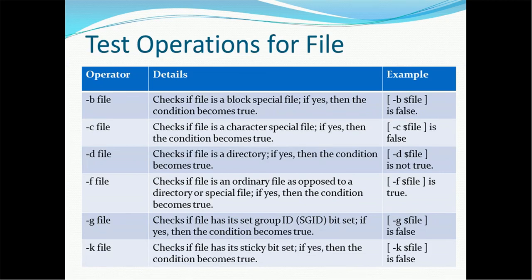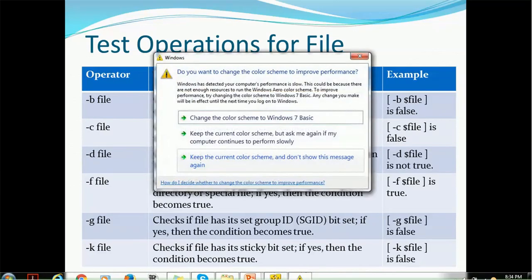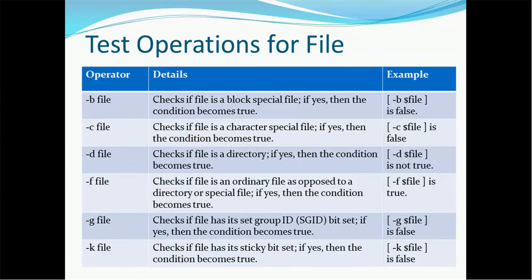There are several test operations we can perform on a file. The very first operator is hyphen b followed by the file name. It checks if the file is a block special file, and if yes, then the condition becomes true. The condition will be written in rectangle brackets as hyphen b dollar file, where dollar file is the file location. This condition becomes true only if the file is a block special file.